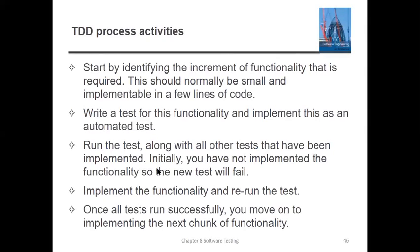The process activities of TDD begin with identifying functionality — how many functions will be used in the first development case. Whether the module is small or large, you find out from the lines of code how you are going to test it. For example, a calculator program has four modules: addition, subtraction, multiplication, and division. It is not necessary to test the entire calculator program at once.